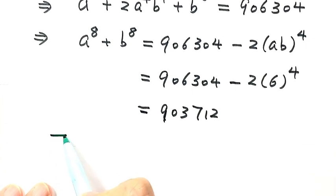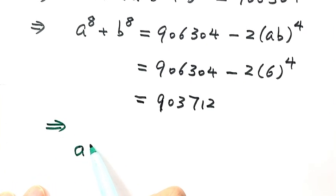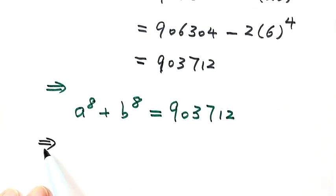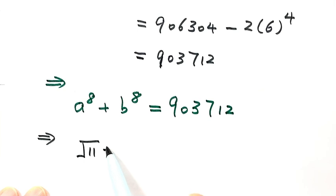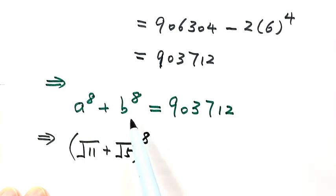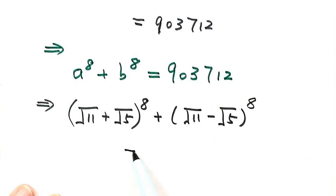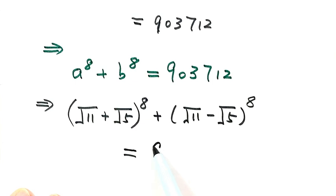Now let's back substitute. Since A = √11 + √5 and B = √11 − √5, we have (√11 + √5)⁸ + (√11 − √5)⁸ = 903,712. So this is the answer for this question.